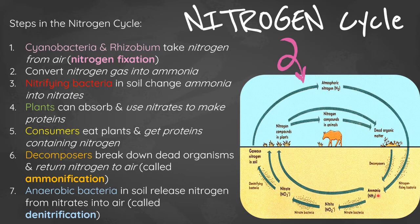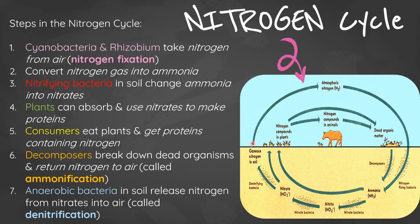Anaerobic bacteria in soil also release nitrogen from nitrates into the air, and this is called denitrification. So to summarize: nitrogen-fixing bacteria form ammonia; ammonia is converted to nitrates by nitrifying bacteria; and nitrates are converted back to gaseous nitrogen by denitrifying bacteria.